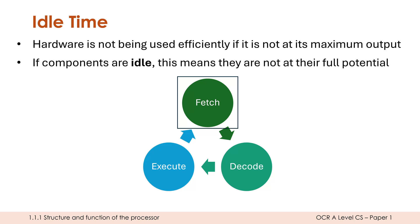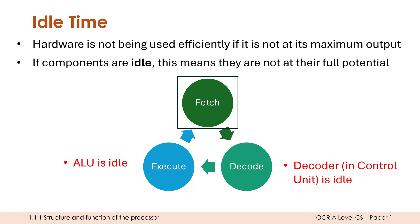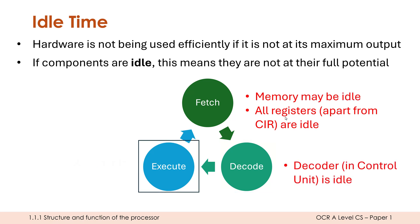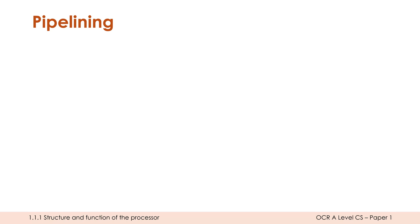If fetch is active, the decoder — part of the control unit — is idle, and the ALU is idle if execute isn't running. If we're decoding, the ALU is still idle and memory and most registers aren't being used either. At execute, the ALU finally does something but the other two stages are idle. This is not efficient. Pipelining will never achieve perfect efficiency, but it gets you a lot closer.